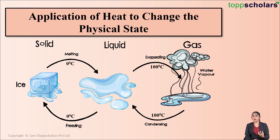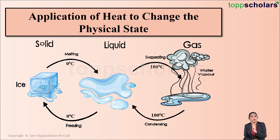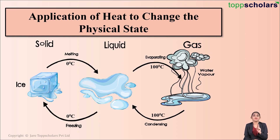If you take this liquid water and start boiling it — start heating it — it starts boiling, and after some time you will notice vapors coming out. This vapor is nothing but steam, which means liquid water on heating gets converted into gaseous water vapor. The liquid state is converted into the gaseous state, and this process is called evaporation. The boiling point of water is 100 degree Celsius, meaning at 100 degree Celsius, liquid water gets converted into water vapor.